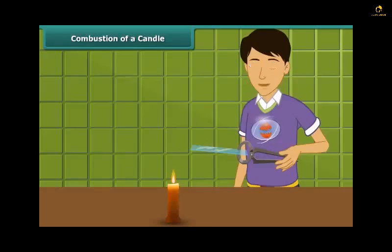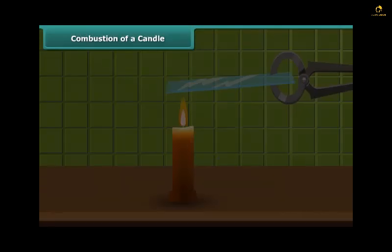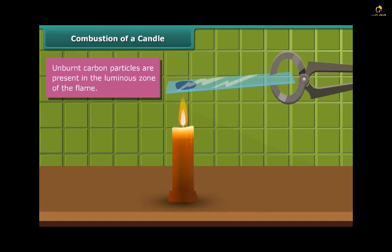Let us watch Rohan performing an activity. He is introducing a glass plate into the luminous zone of the candle flame with the help of a pair of tongs. The glass forms circular blackish spots indicating the presence of unburnt carbon particles present in the luminous zone of the flame.